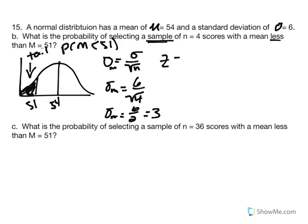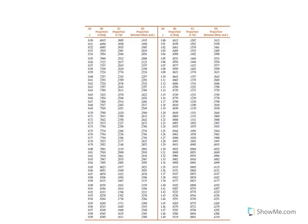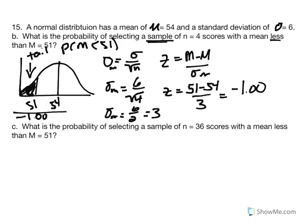Standard error of the mean equals standard deviation over square root of n — 6 over the square root of 4, which is 6 divided by 2, giving us 3. Our z-score is m minus mu divided by standard error: 51 minus 54 divided by 3 equals negative 1. We're looking at the tail, so we use the unit normal table with z of 1. The area in the tail is 0.1587.